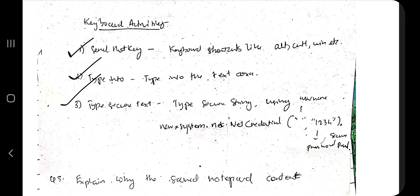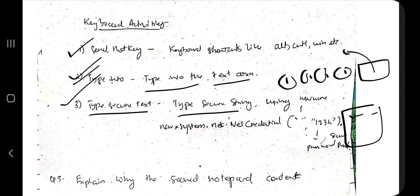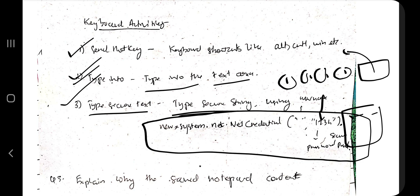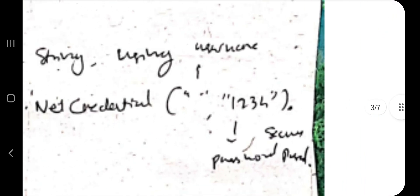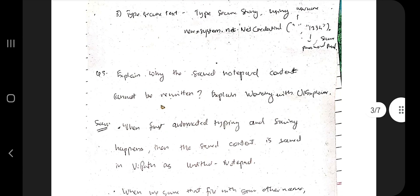For keyboard activities, there are three types: Send Hotkey, Type Into, and Type Secure Text. Send Hotkey lets you use Ctrl, Alt, Win, or other key combinations. If you're not getting the concept, watch the tutorial video as it explains with examples. Type Into is for typing text into a text area, like typing in Notepad. Type Secure Text uses a secure string — for example, you type something like '1234' but it remains hidden and secure.